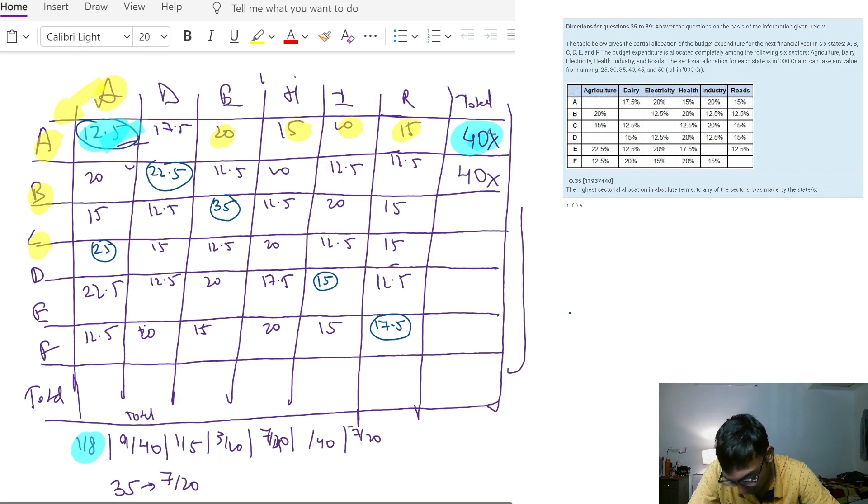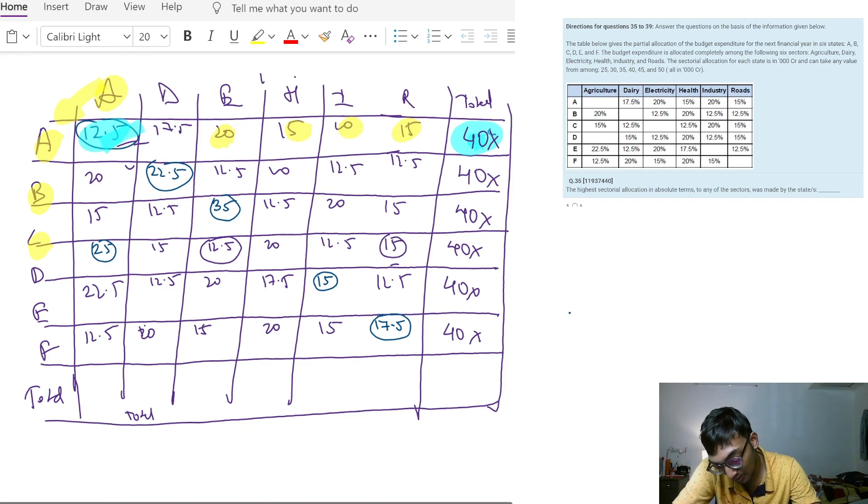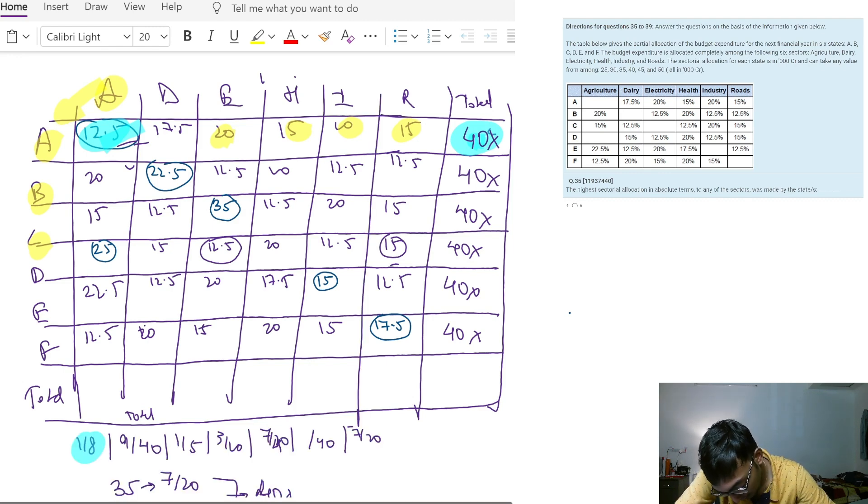Let's say if I took 20 as the number, this will become 2.5 which is not possible. So we have to take a number which is divisible by both, which is 40. So if I take 40 here, similarly here 12.5% shows 40, 17.5% shows 40. So we figured out that all the numbers will be multiples of 40.